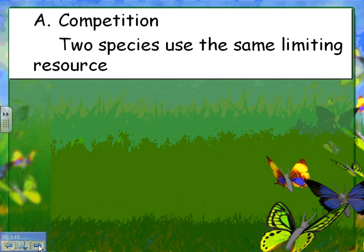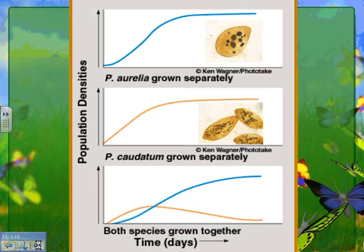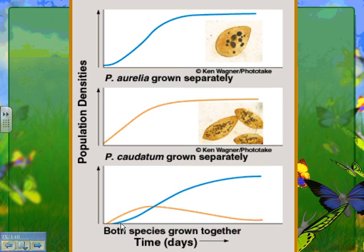Let's look at competition. Two species using the same limiting resource: here is P. aurelia grown separately — a type of microorganism — and here is P. caudatum, which grows a little faster at first and reaches its carrying capacity. But when both species are grown together, P. caudatum grows faster initially, then P. aurelia outcompetes it. By the end, you get mostly P. aurelia with very little P. caudatum — P. aurelia was the better competitor for that environment.